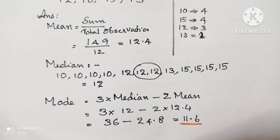The empirical formula is mode equals 3 times median minus 2 mean. We have to find the mean and median. Mean is equal to 12.4 and the median is equal to 12. After that, find the mode using the empirical formula. The answer is 11.6.